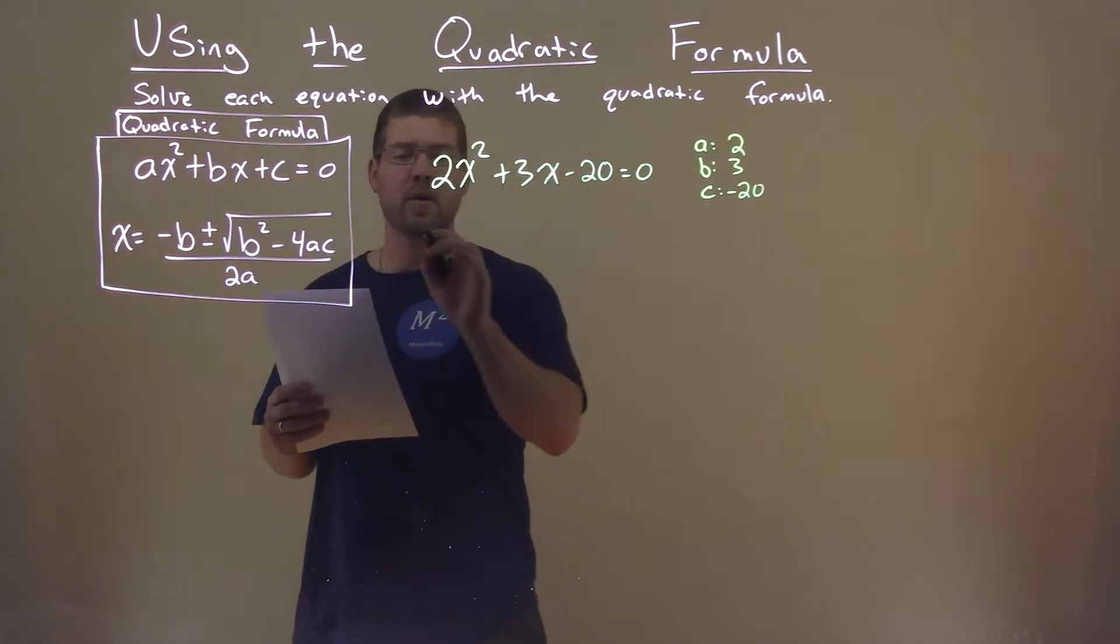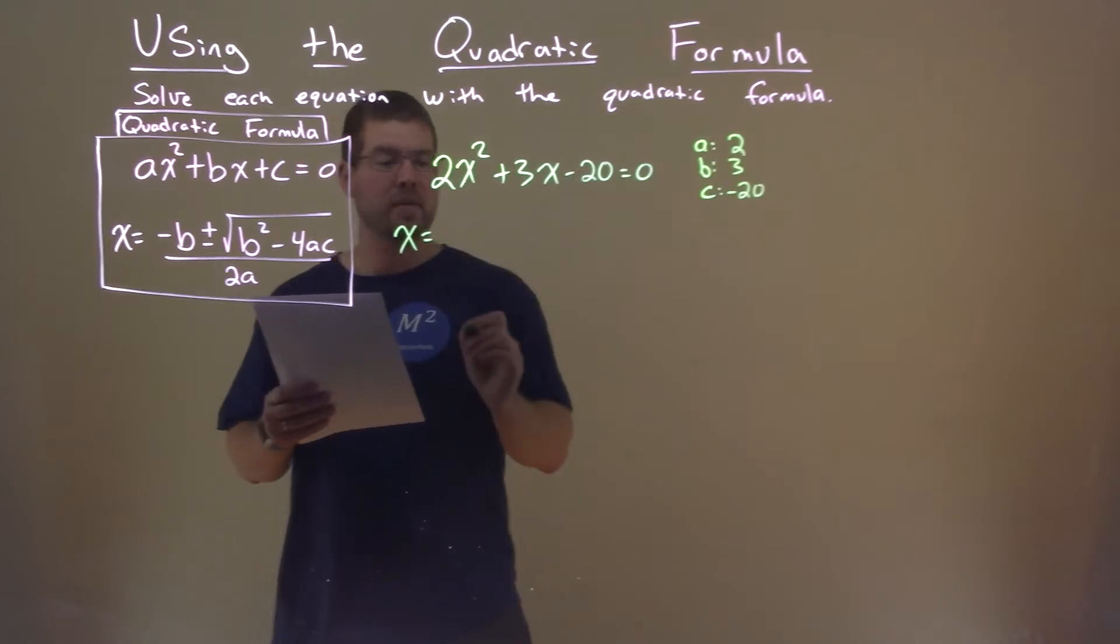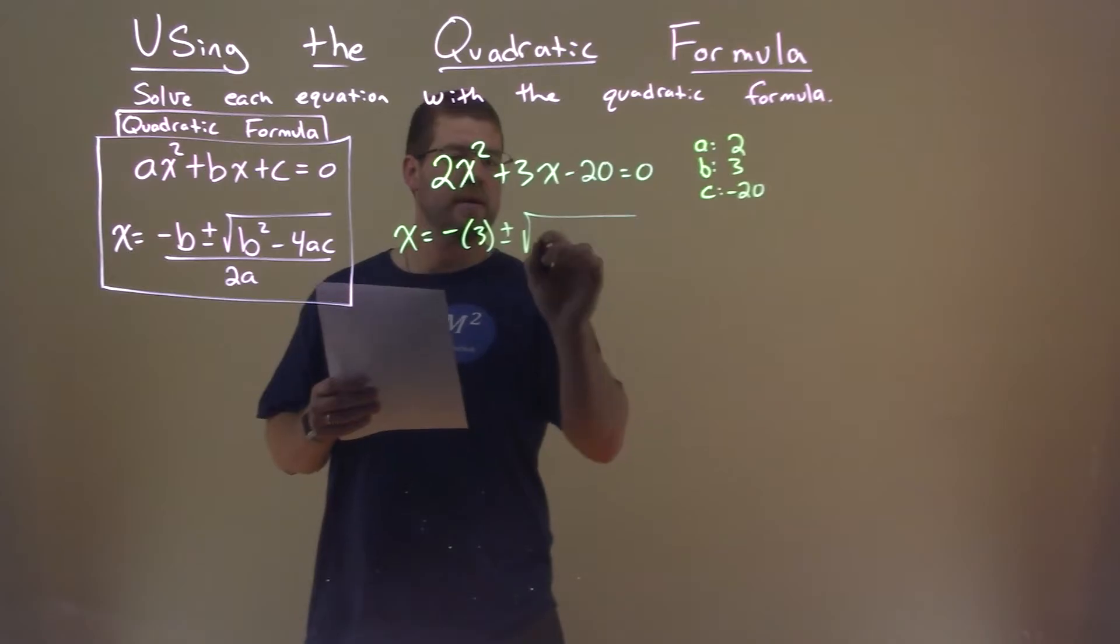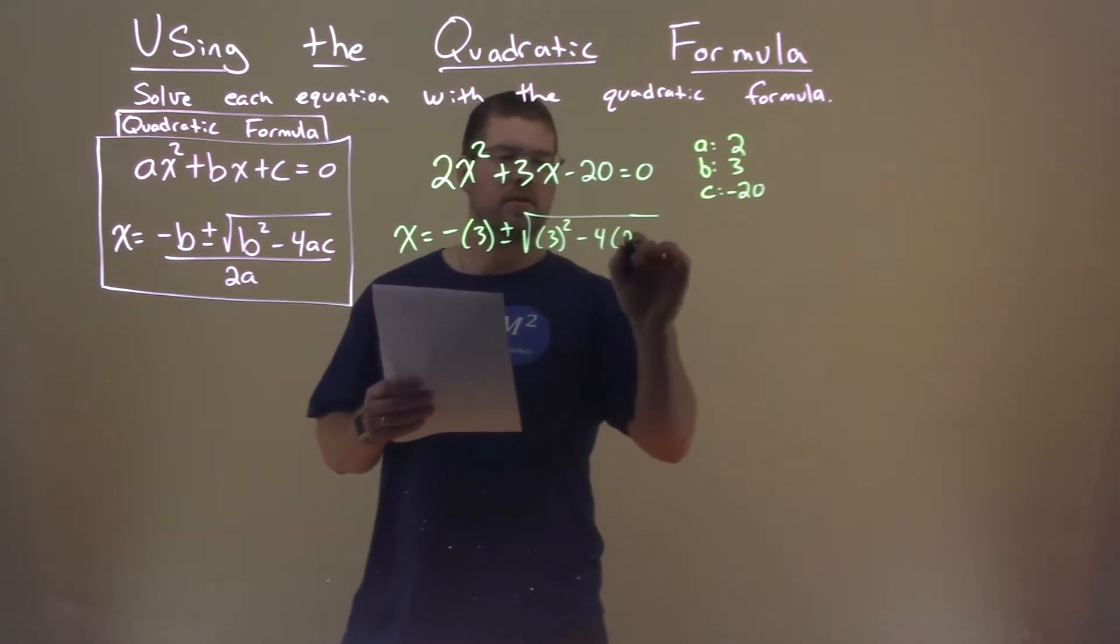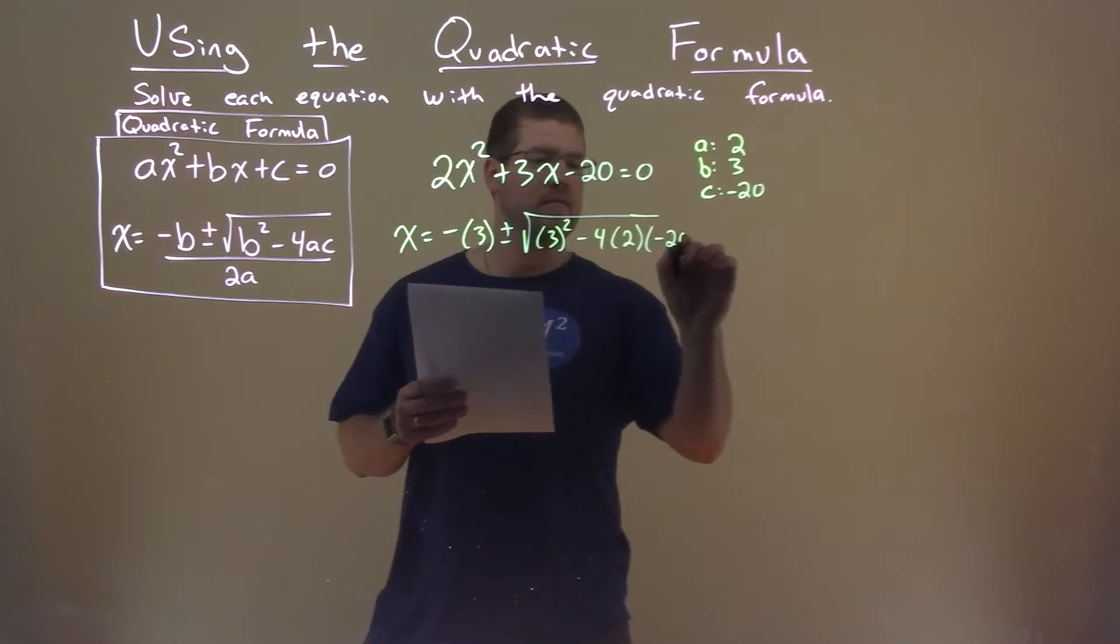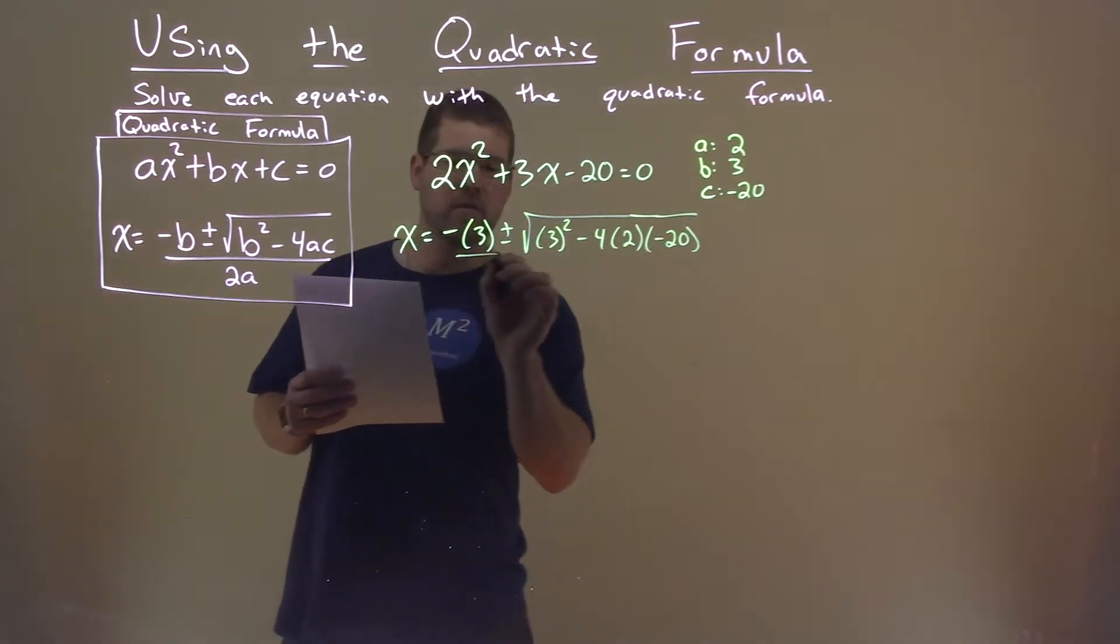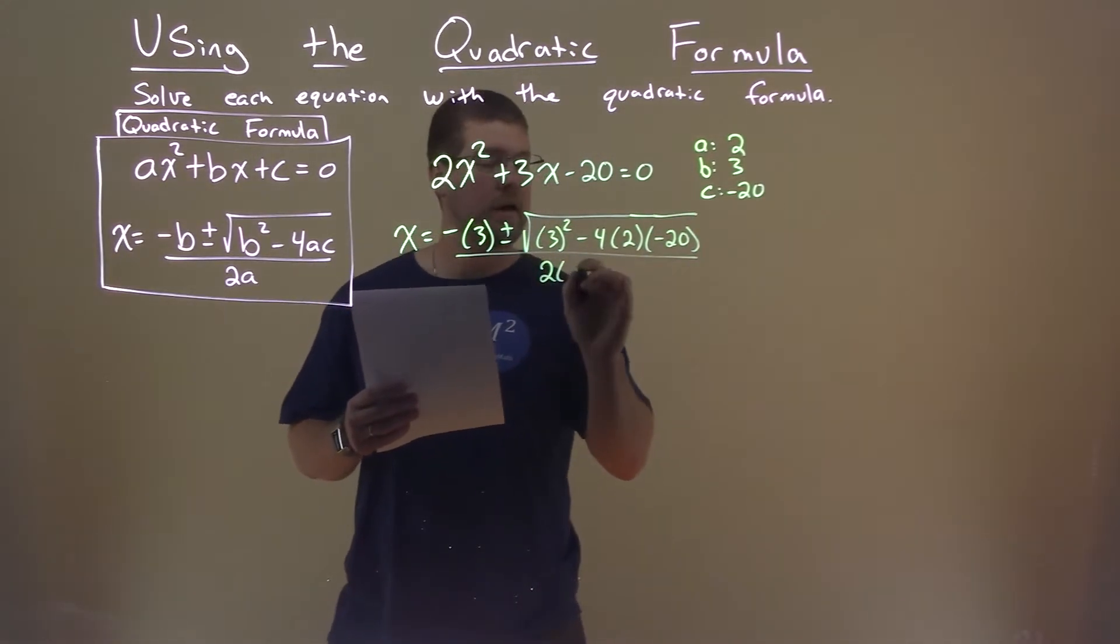From here we can use the quadratic formula: x equals negative b, which is 3, plus or minus the square root of b² minus 4 times a, which is 2, times c, which is -20, all over 2a, which is 2.